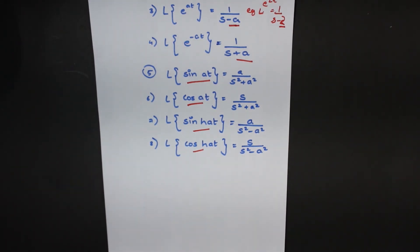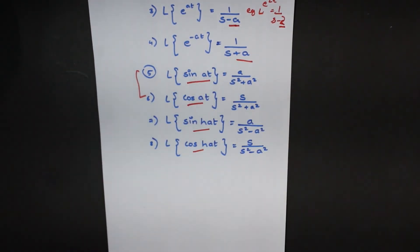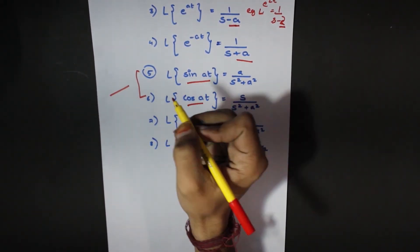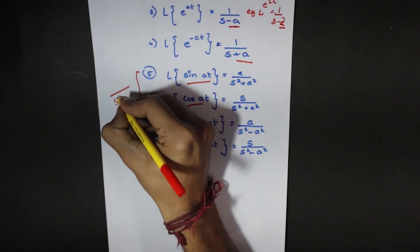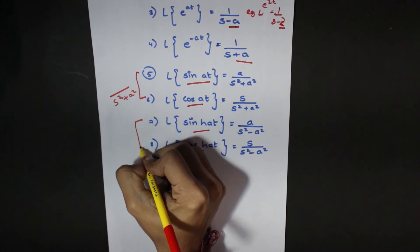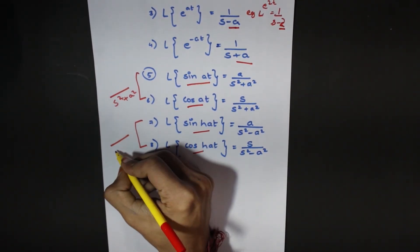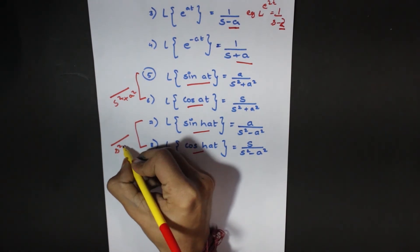Now the easiest way to remember: for normal trigonometric functions, sine and cos, the denominator is s square plus a square. And for the hyperbolic functions, the easiest way to remember is that the denominator is s square minus a square.